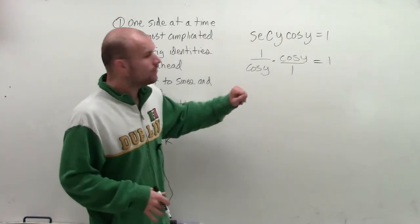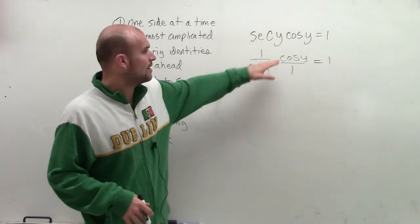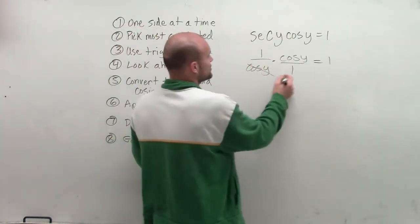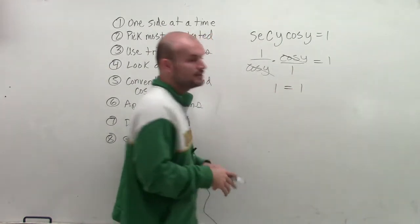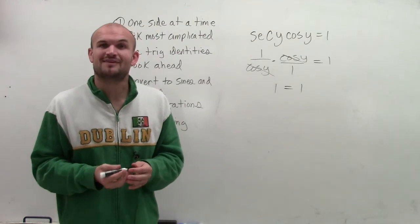Now, what I'll have is I'll have 1 over cosine of y times cosine of y. And those are going to divide out to 1, which will leave me with 1 equals 1. So therefore, I have now verified the identity.